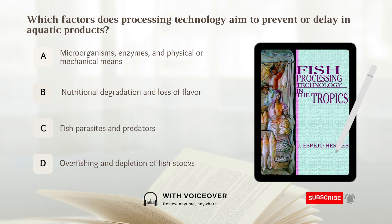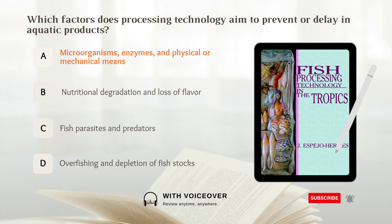Which factors does processing technology aim to prevent or delay in aquatic products? A. Microorganisms, enzymes, and physical or mechanical means. B. Nutritional degradation and loss of flavor. C. Fish parasites and predators. D. Overfishing and depletion of fish stocks. Answer: A. Processing technology aims to prevent or delay the action of microorganisms, enzymes, and physical or mechanical means in aquatic products.